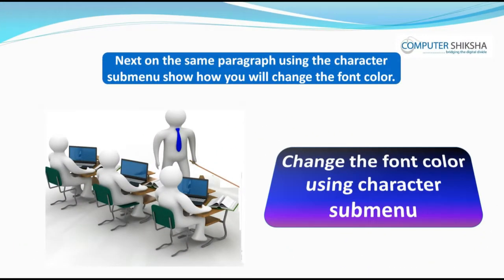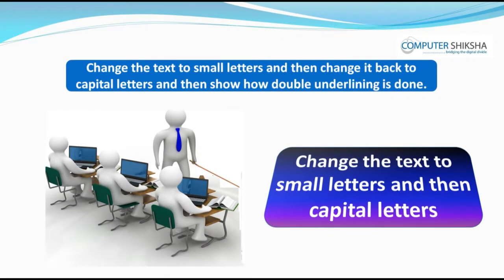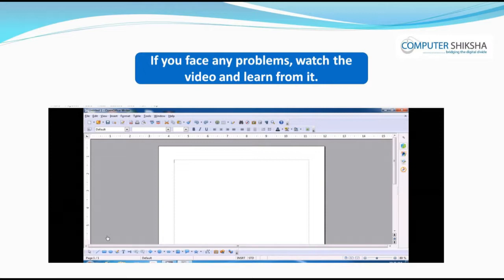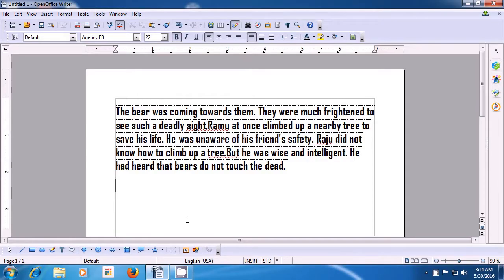Next, on the same paragraph using the character submenu, show how you will change the font color. Change the text to small letters and then change it back to capital letters, and then show how double underlining is done. If you face a problem, watch the video and learn. This video will help us to practice changing the font color, changing the paragraph font into small capitals, and underlining.